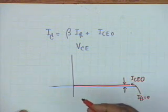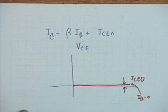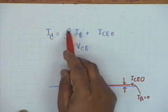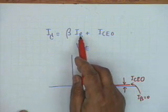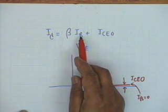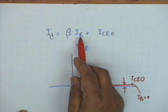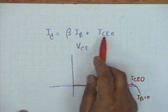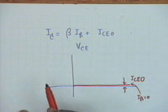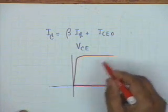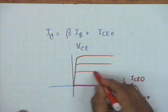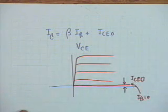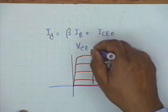When I_B increases to a non-zero value, the collector current increases by β·I_B. So equal increments of I_B cause equal increments of I_C, since ICEO is a constant. As we go ahead, we have curves, each representing a certain value of I_B, with I_B increasing in one direction.